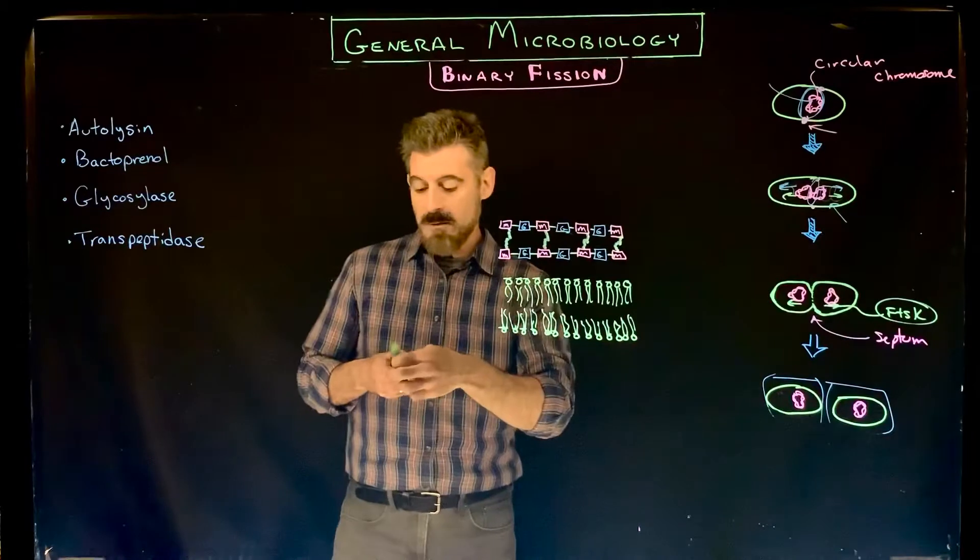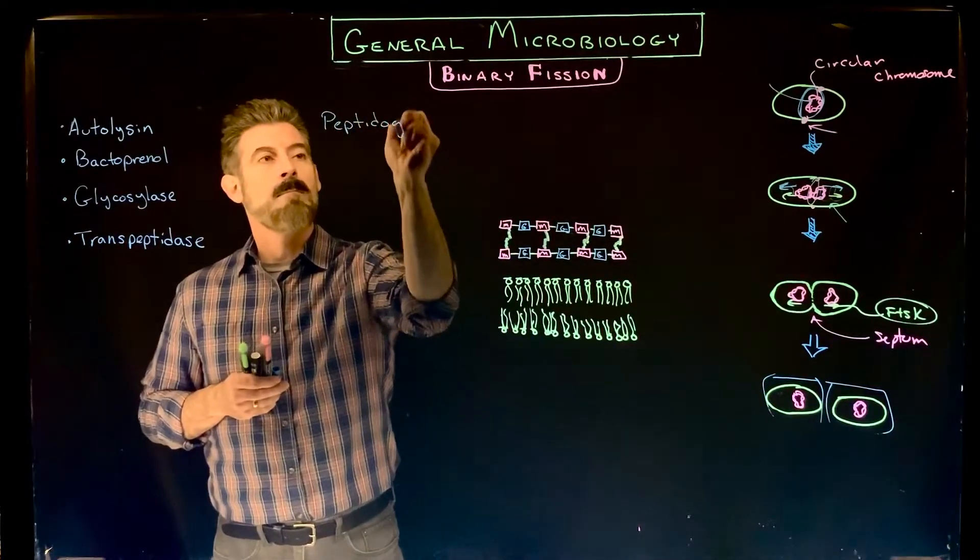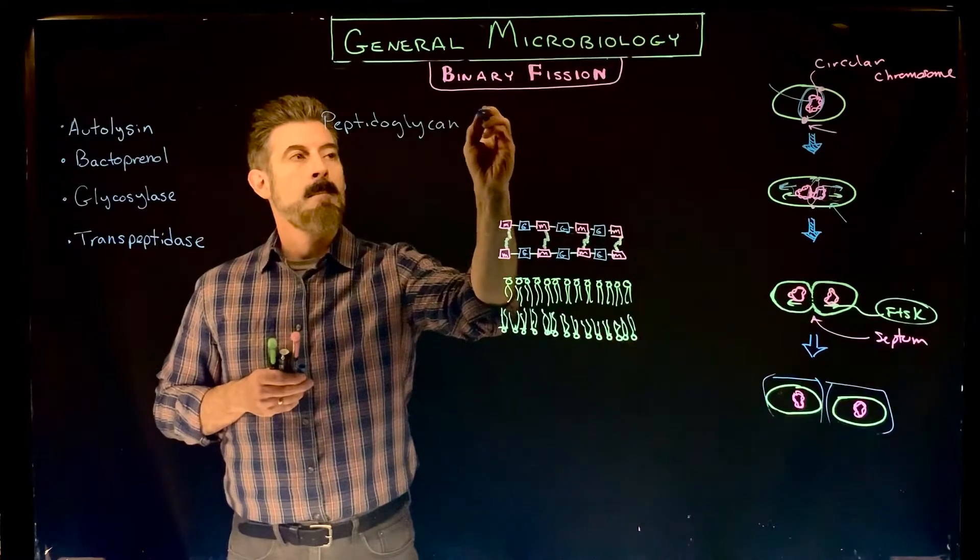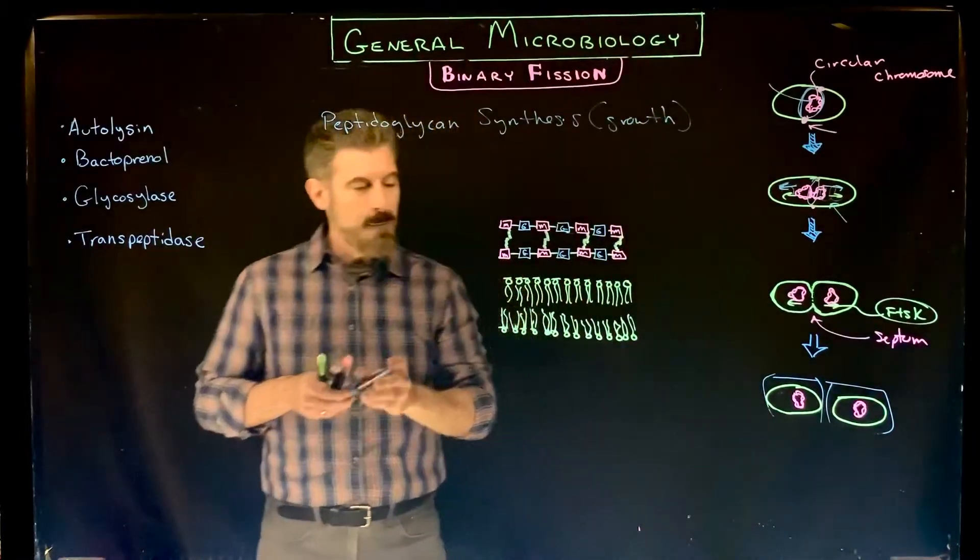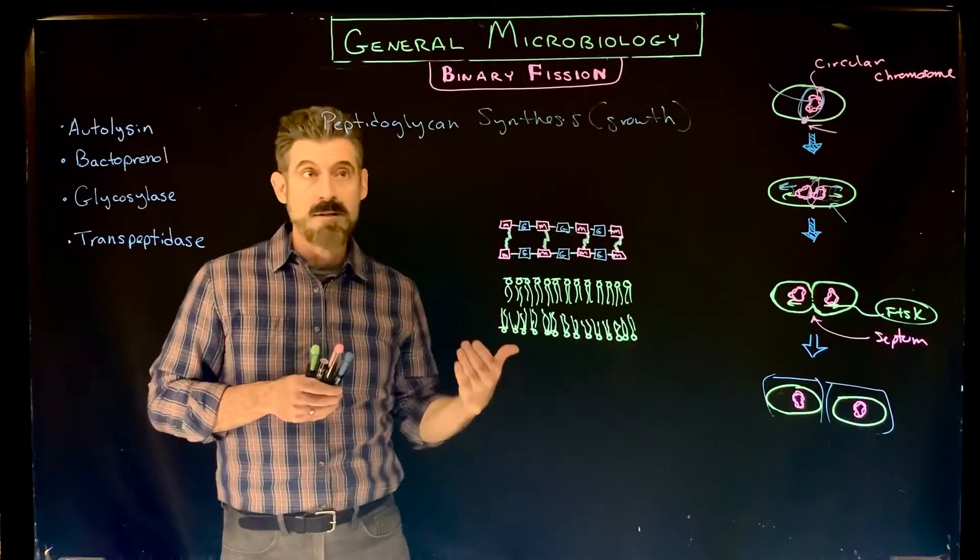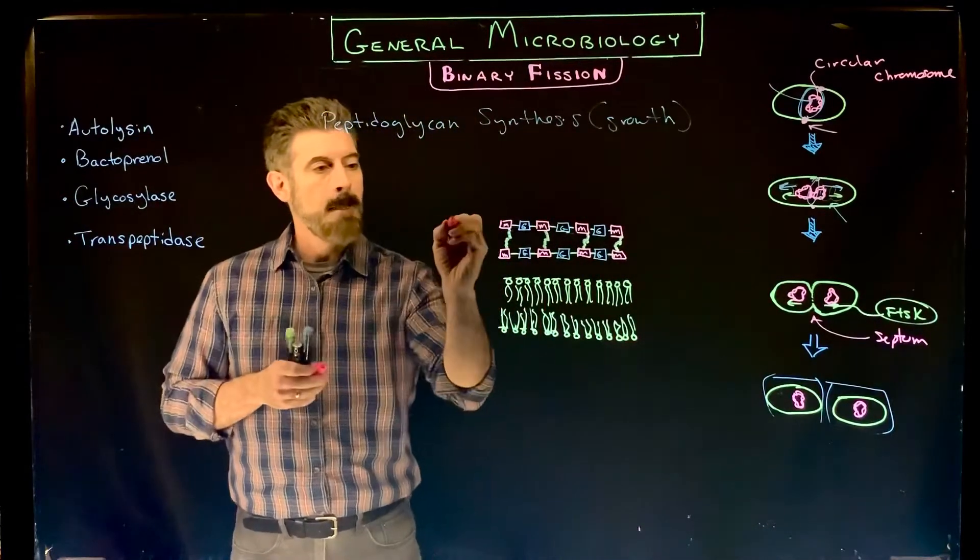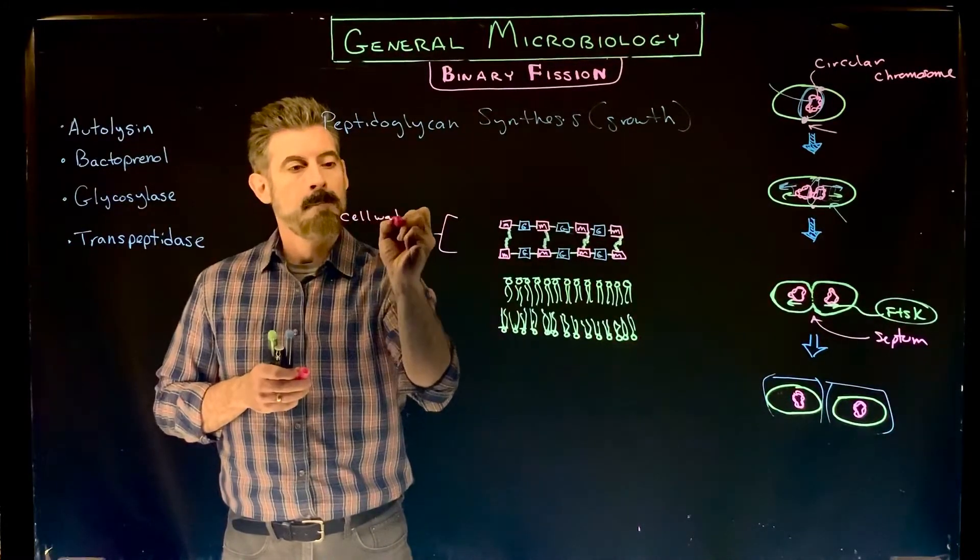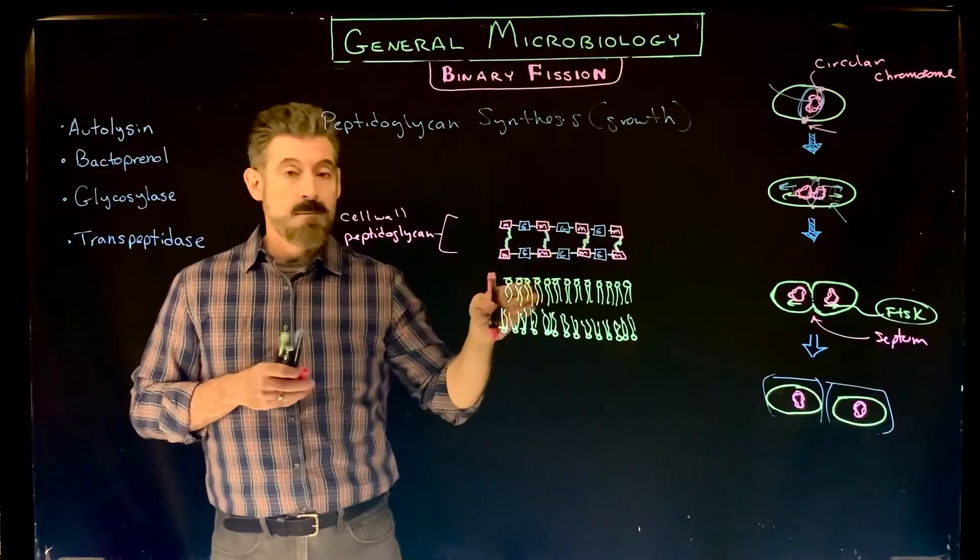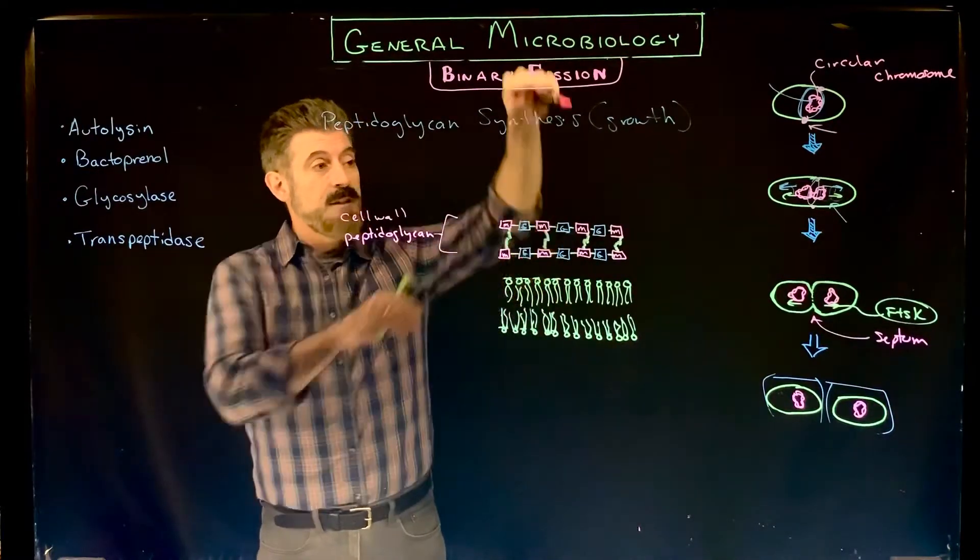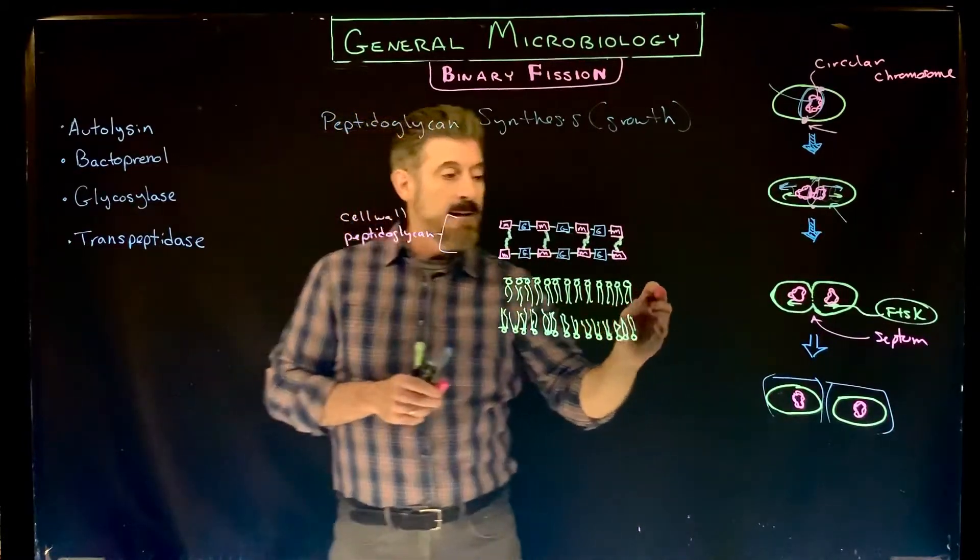While that's happening, we have to also replicate or add to the peptidoglycan. We're not just talking about making it from scratch but growing or adding to the existing peptidoglycan. I drew two glycan layers here representing the peptidoglycan. In a gram-negative cell that's typically all there is. In a gram-positive cell there'd be 50 to 100 of these thick layers because it's much thicker peptidoglycan.